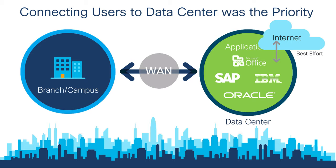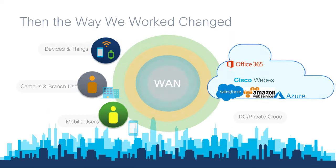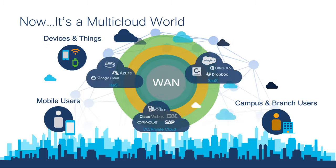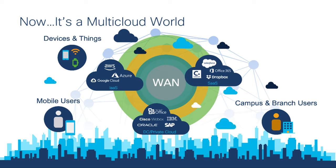Suddenly, critical business resources are now hosted outside the organization, within some nebulous cloud, and no longer found within the data center. To further compound the issue, most organizations also subscribed to a centralized internet access model, meaning internet access to the cloud also came out of the data center. As cloud architectures really started to ramp up, this method of access no longer sufficed, since it often came with a steep latency penalty.